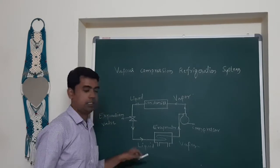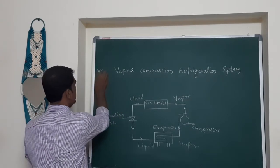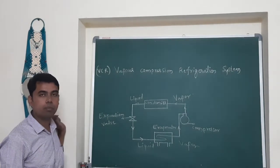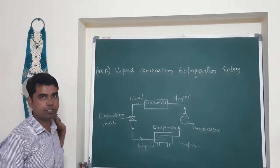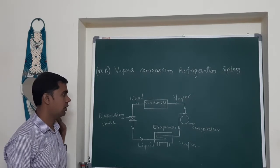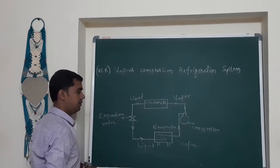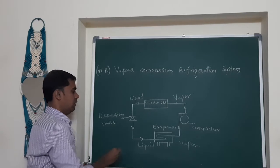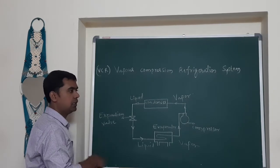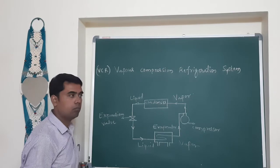Let us discuss the vapor compression refrigeration cycle, also called VCR. It works on the principle of evaporation and condensation. It has four parts: expansion valve, condenser, compressor, and evaporator. The refrigerant which operates inside the refrigeration system is a fluid with a low boiling point — this is mostly suitable for ammonia.